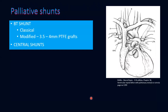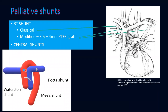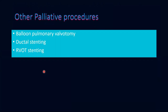Palliative shunts: the classical BT shunt is an end-to-side anastomosis of the right subclavian artery to the right pulmonary artery. Modified BT shunts are performed with PTFE grafts, usually 3.5 or 4 mm for children weighing 3 to 5 kg, performed on either the right side from the innominate bifurcation or on the left side from the left subclavian artery. Central shunts include the Waterston shunt between the ascending aorta and RPA, the Potts shunt between the descending aorta and LPA, and the MEES or Melbourne shunt between the ascending aorta and MPA. There are also newer palliative procedures like balloon pulmonary valvotomy, ductal stenting, or RVOT stenting for select indications.